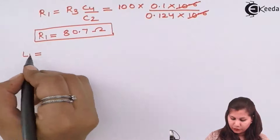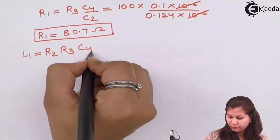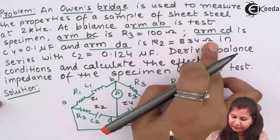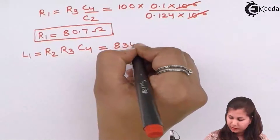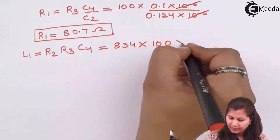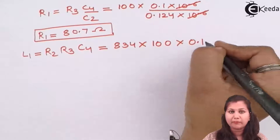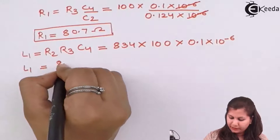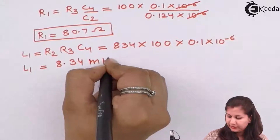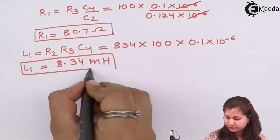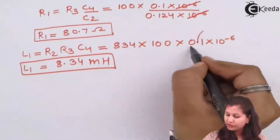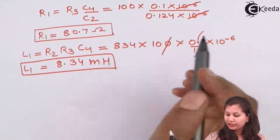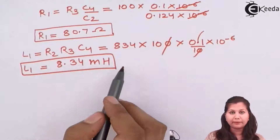L1 = R2·R3·C4. R2 is given as 834 ohms, R3 is given as 100, and C4 is given as 0.1 microfarad, so multiplying by 10⁻⁶. L1 comes out to be 8.34 millihenrys, since 834 × 100 × 0.1×10⁻⁶ = 8.34×10⁻³.